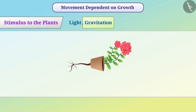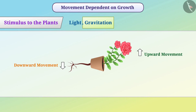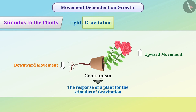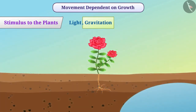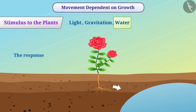Roots of a plant always grow downward and the shoot always grows upward. This downward movement of roots and upward movement of the shoot is a response to the stimulus of gravitation. The response given to the stimulus of gravitation is called geotropism. Growth of roots downward into the soil is positive geotropism, while the growth of the shoot upward away from the soil is negative geotropism. Roots also grow towards water, and this response is called hydrotropism.